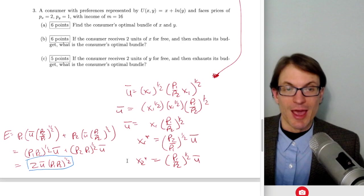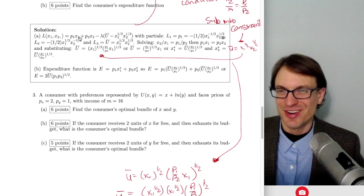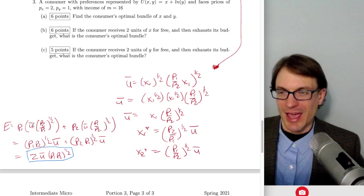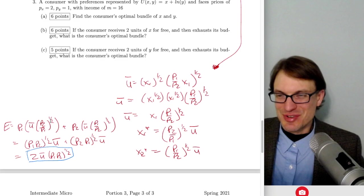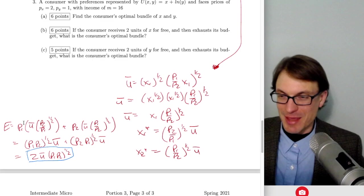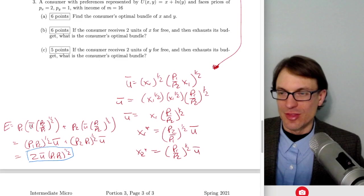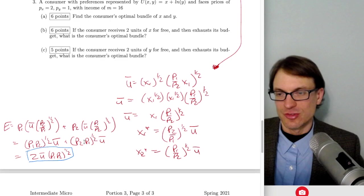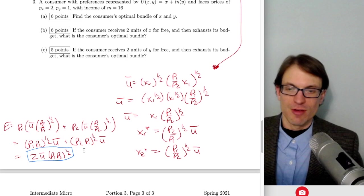To get the expenditure function, plug the Hicksian demands back into the objective function: P1 times X1 star plus P2 times X2 star. P1 times sqrt(P2/P1) times U-bar gives P1 to the one-half times P2 to the one-half times U-bar. Similarly for the second term. Adding both gives 2 times U-bar times sqrt(P1 times P2). That's the expenditure function.